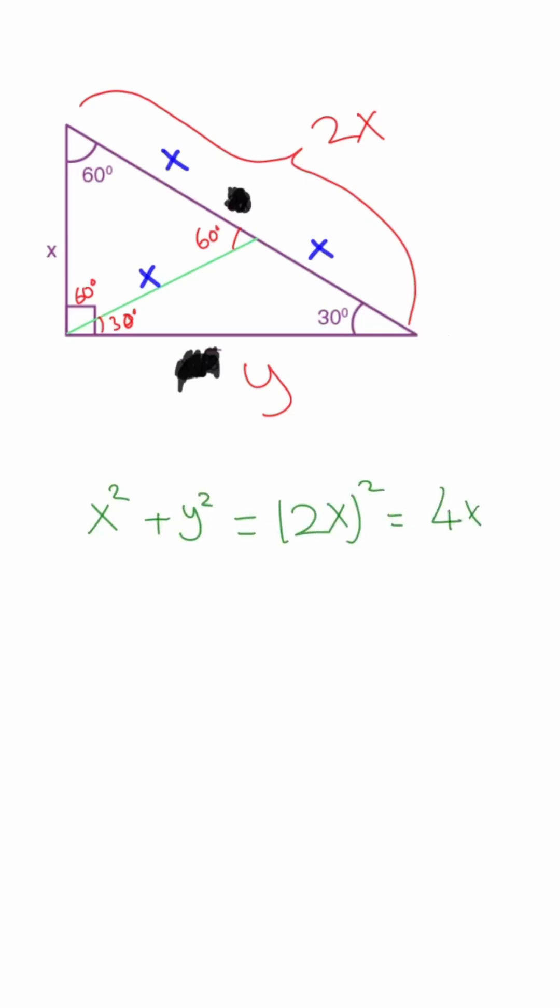Well, to combine x squared and something and get 4x squared, we need y squared to be 3x squared. And if we take the root of both sides, it's going to give us y equals x root 3.